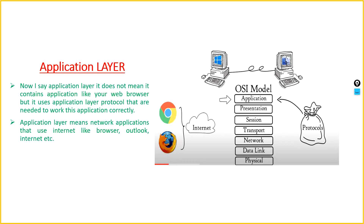The application layer means network applications that use the internet, like a browser, Outlook, or the internet itself. For example, if you open Google Chrome or Mozilla and try to access www.facebook.com, the protocols used for that website will be HTTP and HTTPS. Your web browser uses an application layer protocol to reach that website.